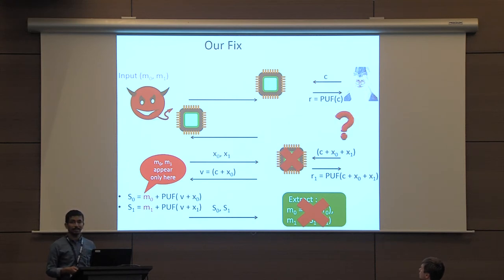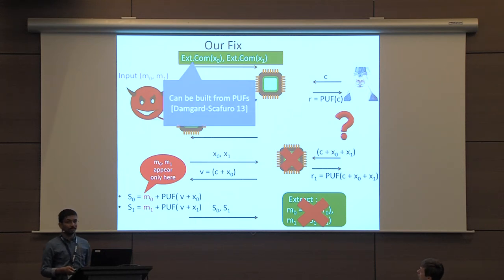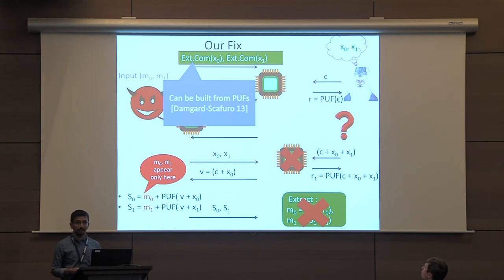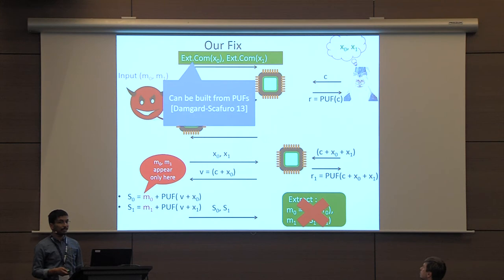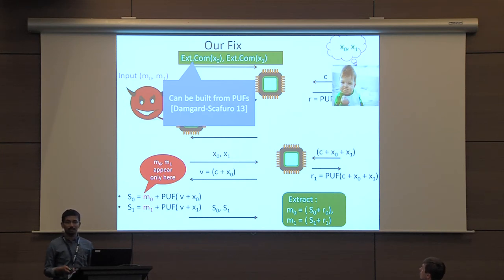In our work, we fix this by forcing the sender in the first round to send an extractable commitment of the two random strings X0 and X1. We know how to build extractable commitments from just PUFs by the work of Damgård and Scafuro. A simulator can learn X0 and X1 from this extractable commitment, whereas a malicious receiver cannot — this follows from the hiding of the commitment. So now the simulator can query the PUF on both C and C XOR X0 XOR X1 in the first round, before returning the PUF, and successfully extract both sender's messages.